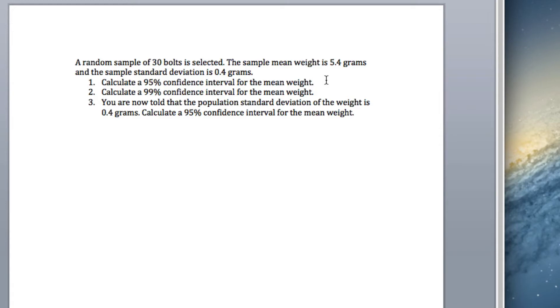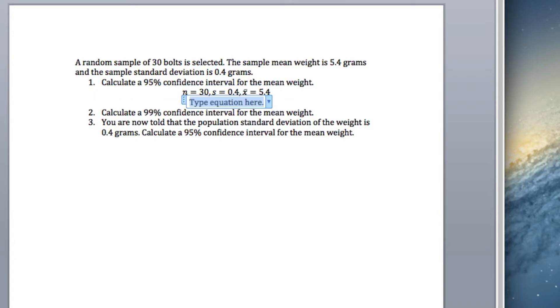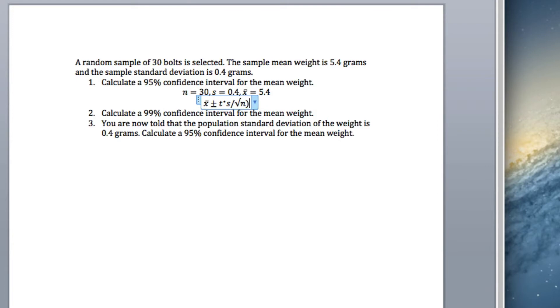Let's start with a 95% confidence interval for the mean weight. So what we've been told, we know that n equals 30, s equals 0.4, and we know that x bar equals 5.4. So the equation we're going to use is going to be x bar plus minus, well, we know the sample standard deviation, so we're going to use a t-star. And then we're going to have a fraction that's going to be s divided by square root of n.